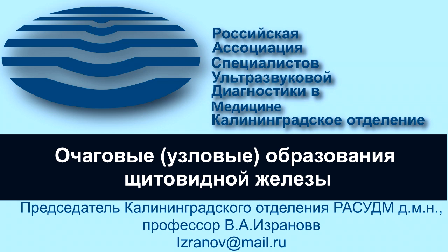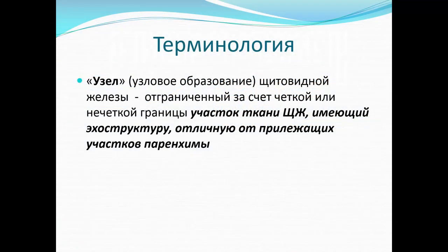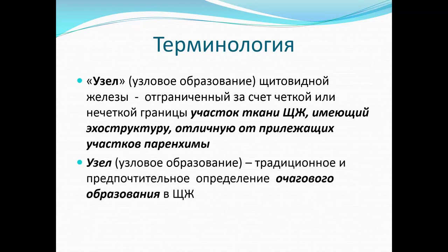Узловое образование щитовидной железы — это отграниченный участок ткани щитовидной железы, имеющий эхо-структуру, отличную от прилежащих участков паренхимы. Термин «узел» или «узловое образование» является традиционным и предпочтительным определением очагового образования щитовидной железы, предпочтительнее термина «очаговое».